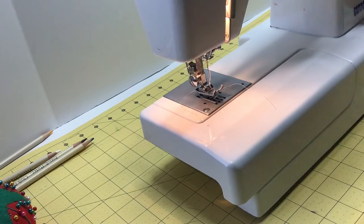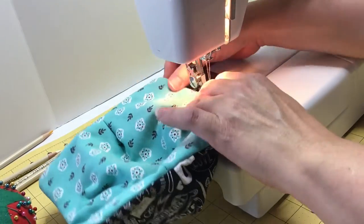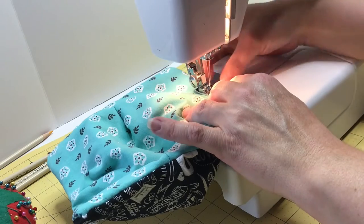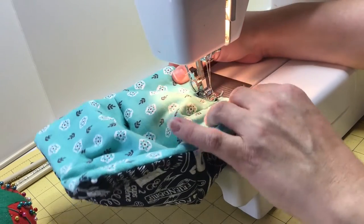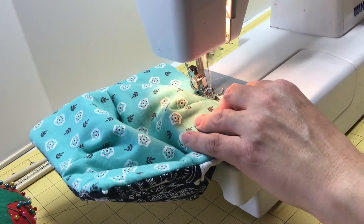Using just less than a 1.25-inch seam allowance, top stitch around the edge of the entire bowl cozy. Be sure you catch the edges along the opening with your stitches.